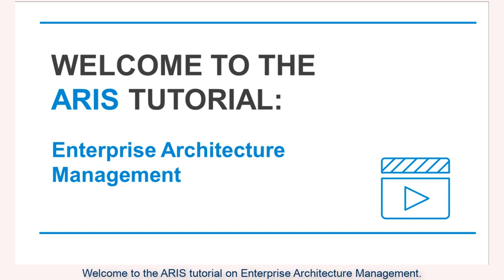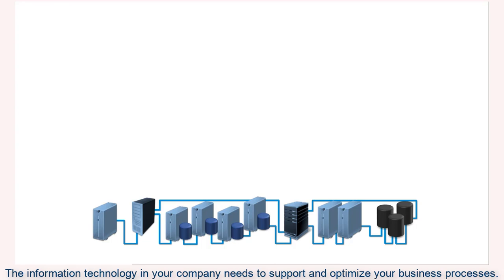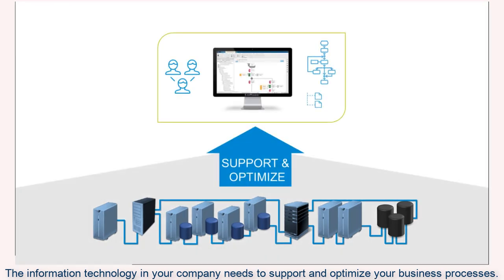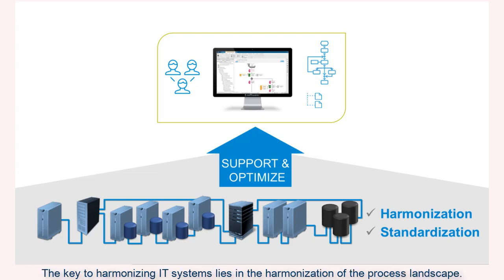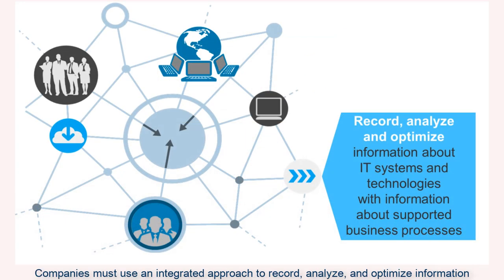Welcome to the ARIS tutorial on Enterprise Architecture Management. The information technology in your company needs to support and optimize your business processes. Harmonization and standardization of the IT landscape are vital to successful enterprise architecture management. The key to harmonizing IT systems lies in the harmonization of the process landscape. Companies must use an integrated approach to record, analyze and optimize information about IT systems and technologies with information about supported business processes.